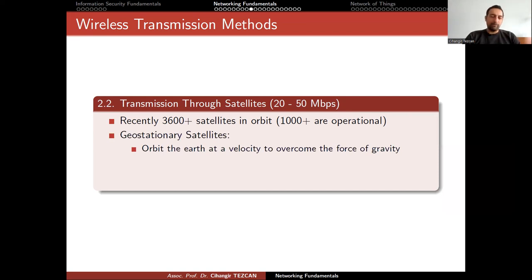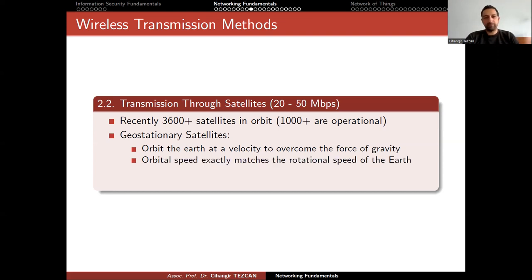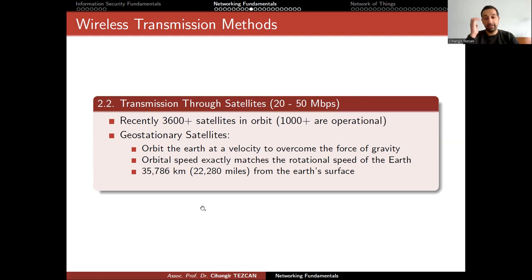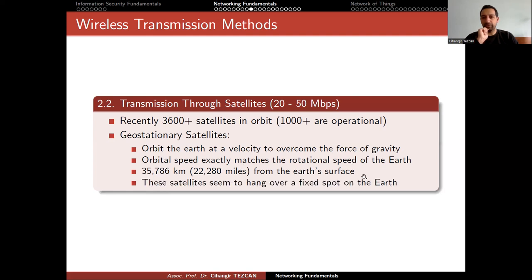An important family of satellites are geostationary satellites. These orbit the Earth at a velocity to overcome the force of gravity, where the orbital speed exactly matches the rotational speed of the Earth. There is a very specific distance from Earth where you can achieve this: 35,786 kilometers. If you send your satellite to this distance, you obtain a geostationary satellite — it has the same speed matching Earth's rotation, and seems to hang over a fixed belt on the Earth.